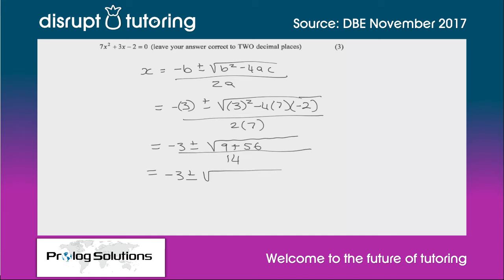Simplifying a little bit further, we get (-3 ± √65) / 14. We can then put this into our calculator.